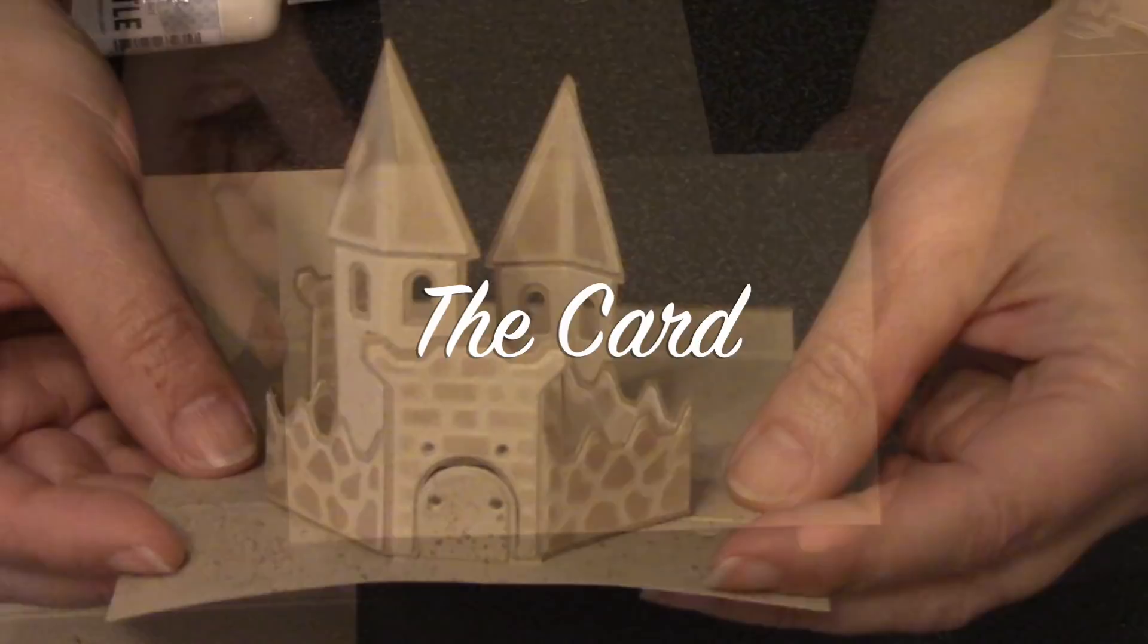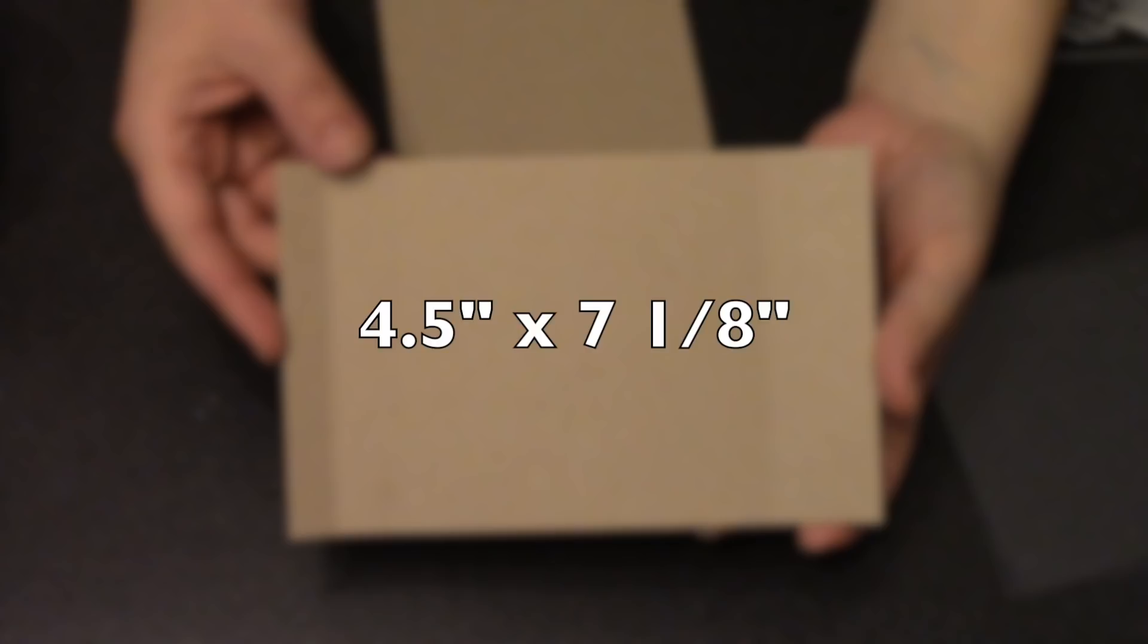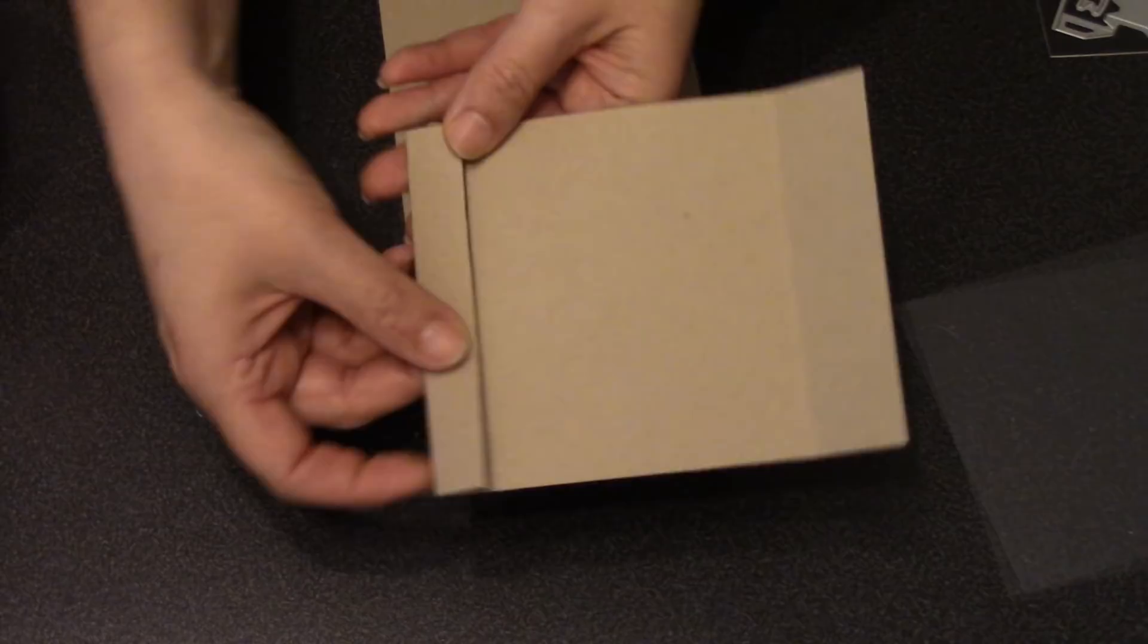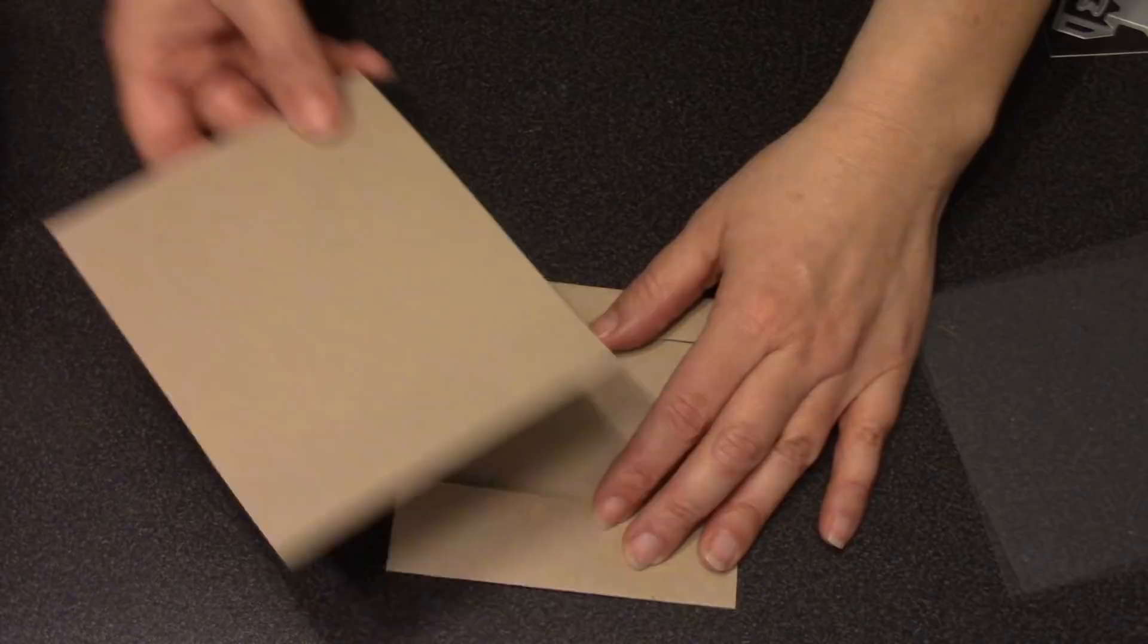Okay, now let's work on the card. I'm starting with a piece of craft cardstock that is 4.5 inches by 7.125 inches. If you start your scoring from the right side, you'll have an 1.25 inch panel, then a 4.5 inch panel, then 0.75 inch panel, and that leaves your 0.625 inch panel on the end. All those folds will be valley folds.